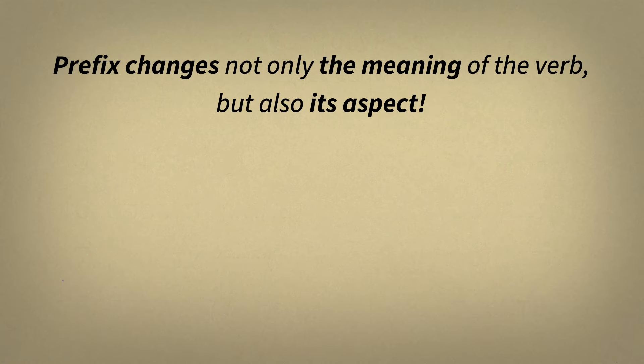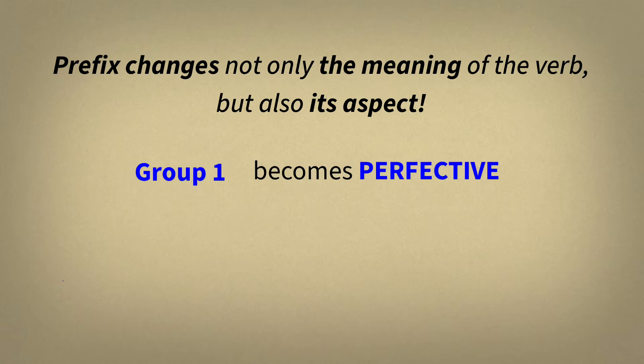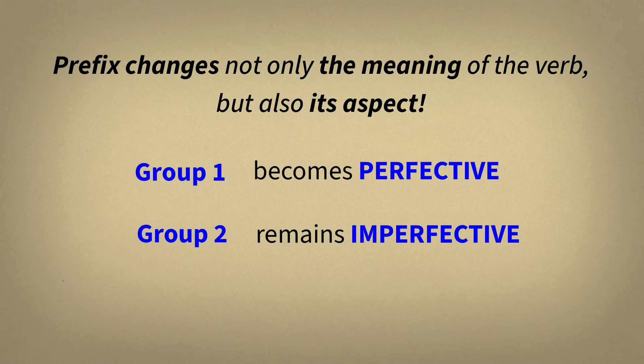When we add a prefix to the verb, not only the meaning of the verb changes, but also its aspect. If we add the prefix to the verb of the first group, it becomes perfective. But verbs of the second group remain imperfective. So, let's begin with the prefix В, and it can also be ВО.